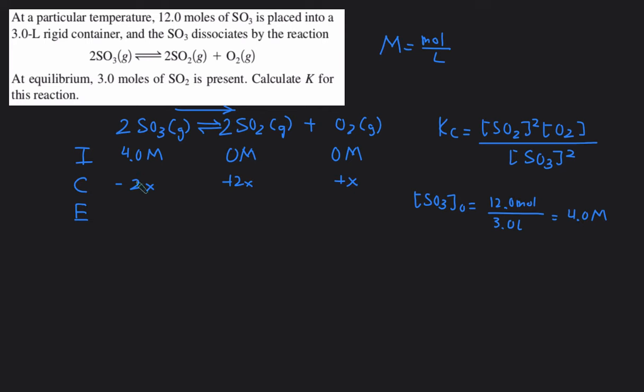Then the E line is just the sum of the I and C line, 4.0 minus 2x, 2x and x.